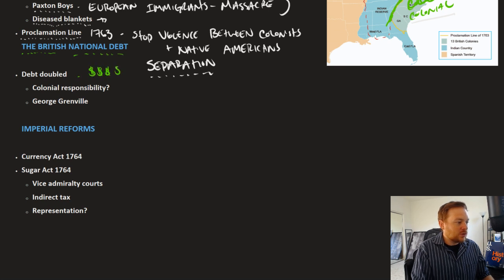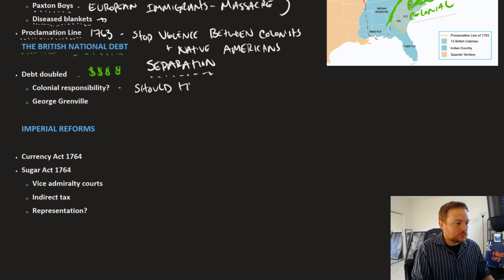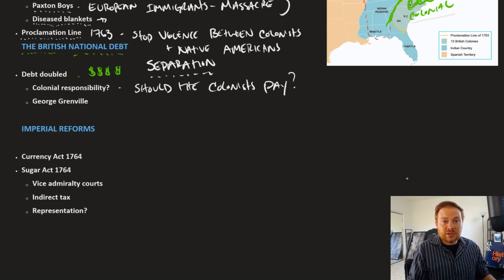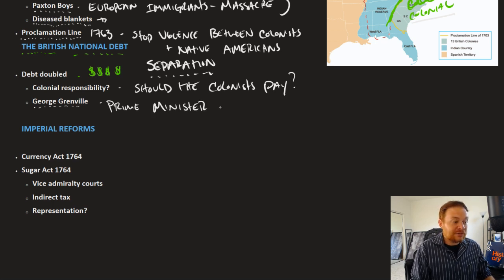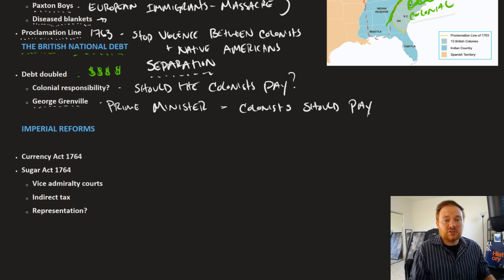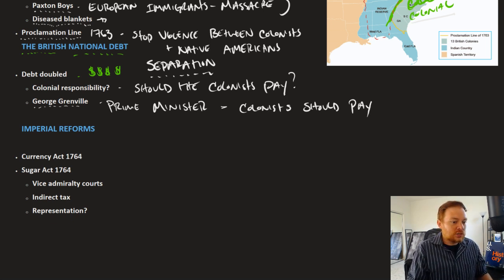The national debt is doubled. The question is: who is responsible for paying that debt? Should the colonists pay for it? Not everybody agrees — the colonists don't believe they should pay for it, or at least not that much. However, George Grenville is appointed prime minister in the aftermath of the Seven Years' War, and he definitely believes the colonists should pay for it. He enacts a set of policies placing this debt burden on the colonists, arguing it was they who benefited most — British soldiers came over, defeated the French, and essentially saved their lives.